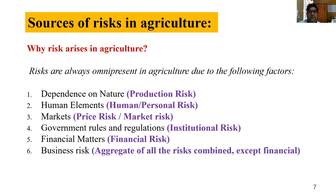What are the sources of risks in agriculture? There are six major sources. The first depends on nature — agriculture is totally dependent on nature. We used to read about the vagaries of monsoon; India is still dependent on monsoon. So this is called production risk.